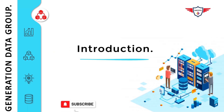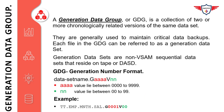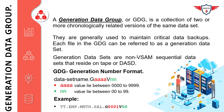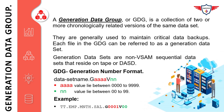A Generation Data Group or GDG is a collection of two or more chronologically related versions of the same data set. Each version is called a generation data set, and generation data sets are non-VSAM sequential data sets that reside on tape or DASD. The naming convention of generation data sets is slightly different — the operating system uses the absolute generation number to uniquely identify each generation data set, and this number is added at the end of the data set name.